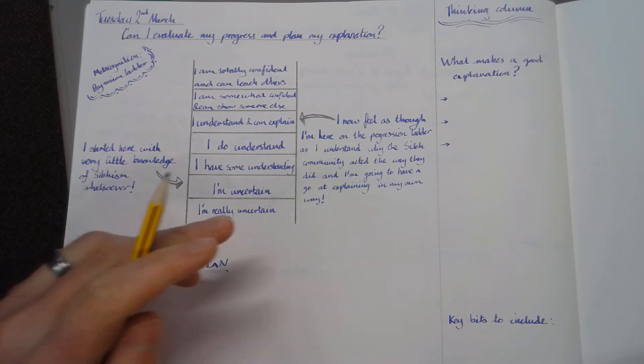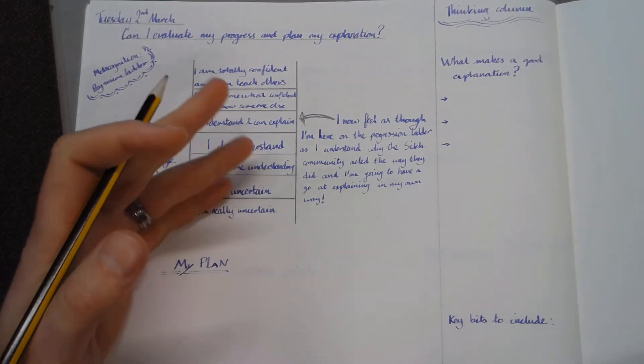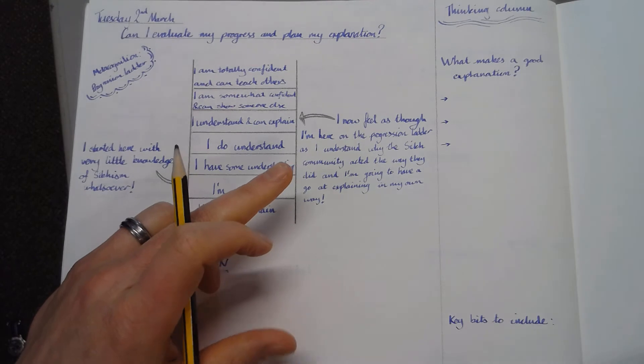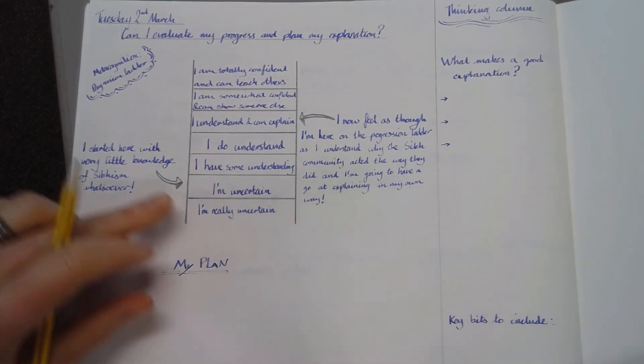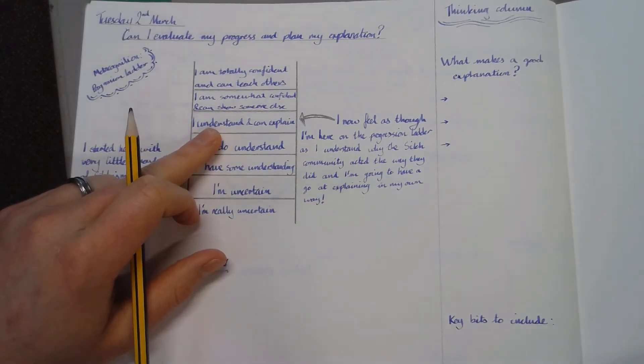So now I feel that I'm here on my progression ladder as I understand why the Sikh community acted the way they did and I'm going to have a go explaining in my own way. So I think I've put myself up here to I understand and can explain.